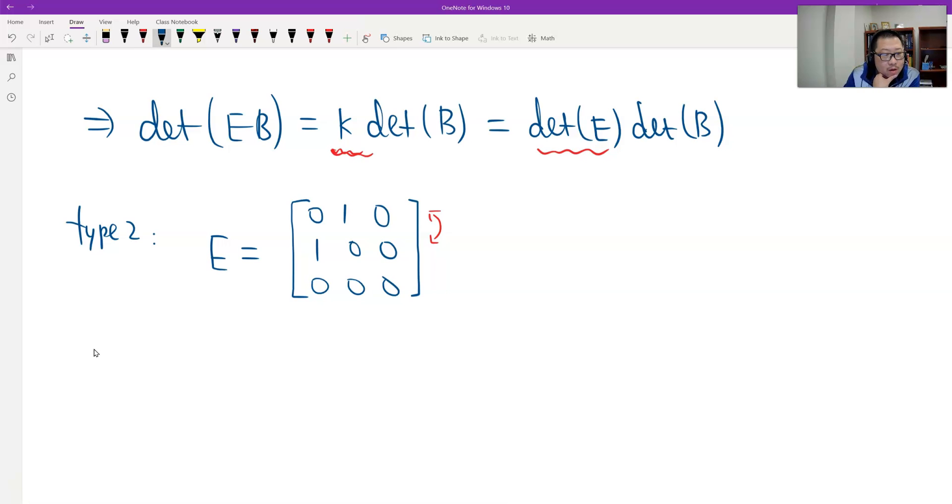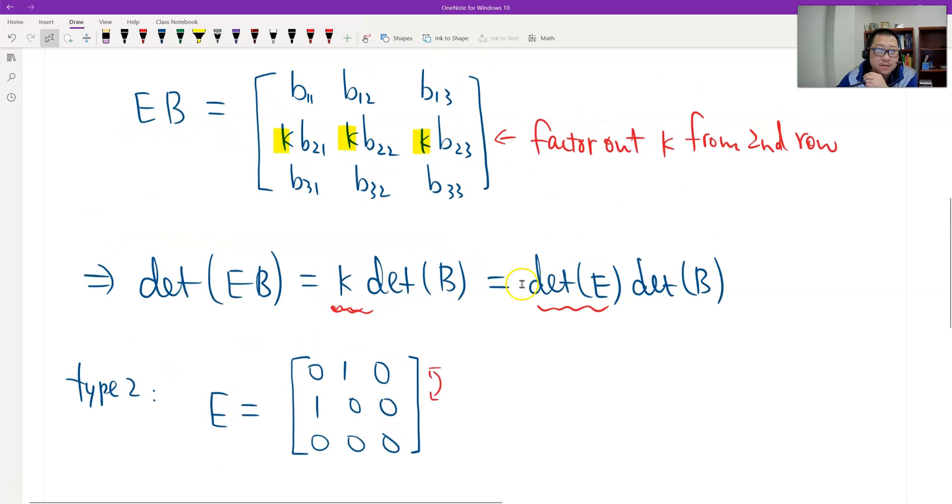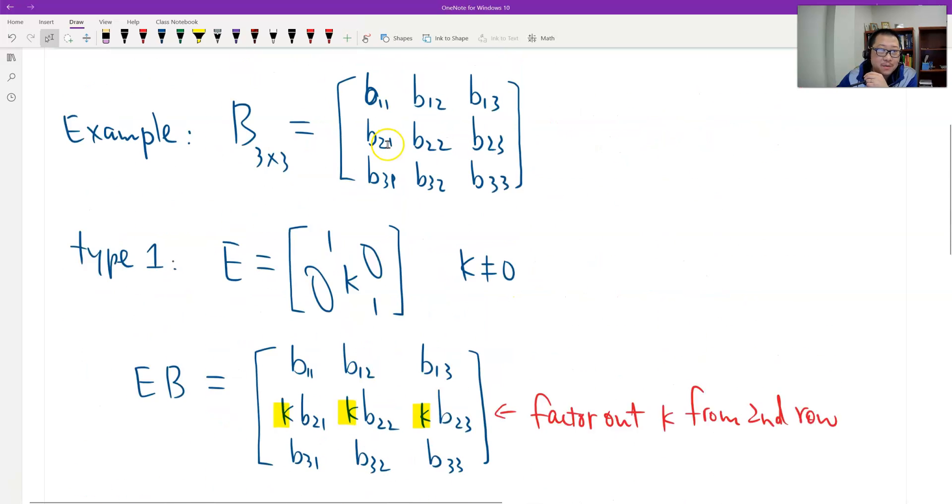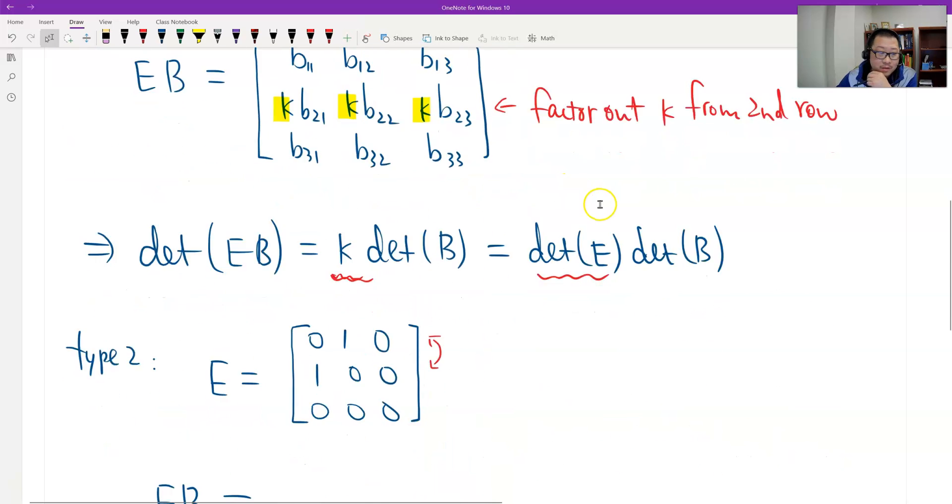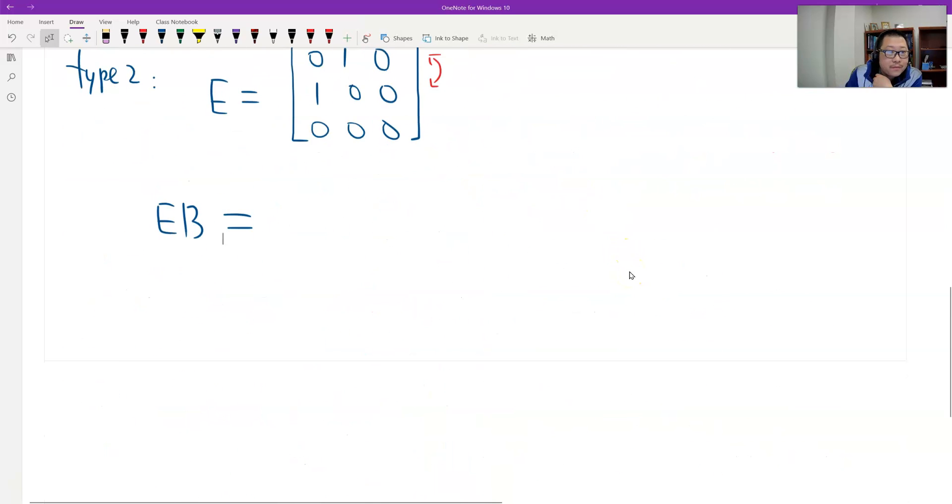I look at E times B. What is E times B? This time, E times B is just an interchange, the first two rows of matrix B. The matrix B is general. Interchange the two rows. Let me write.